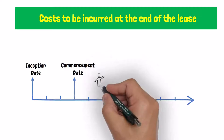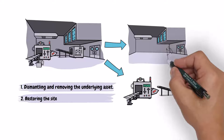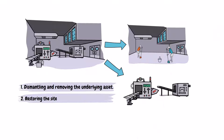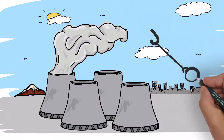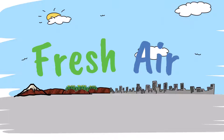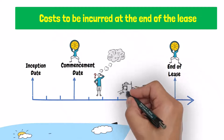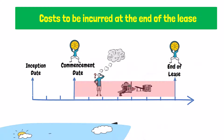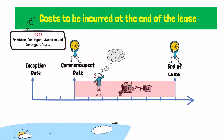The fifth component is an estimate of the costs to be incurred by the lessee in the future at the end of the lease term, for dismantling and removing the underlying asset, and restoring the site on which the leased asset was located, or restoring the underlying asset to the condition required by the terms of the lease. For example, costs to be incurred at the end of the lease term to dismantle a nuclear plant that was built on leased land, and restore the land to its original condition before the lease. The lessee may incur these costs either at the commencement date, or as a consequence of having used the underlying asset during a particular period. The obligations related to these costs are accounted for using IAS 37.